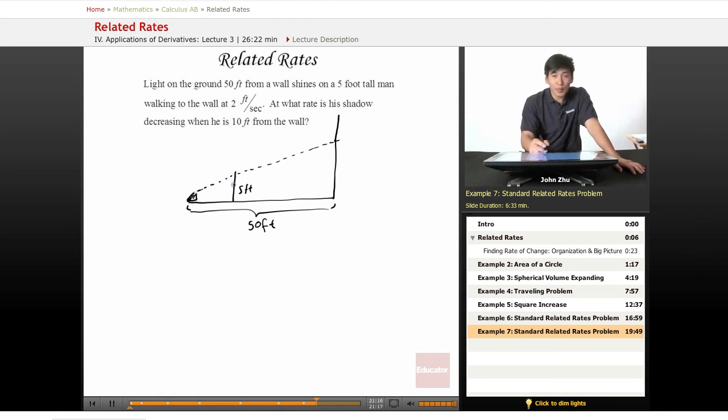So let's put some variables in here so we can use it to solve for derivatives. We're asking for the rate of his shadow decreasing. So here's his shadow. Let's call that Y. And we know that he's walking to the wall at two feet per second. So let's denote this distance x, and this distance 50 minus x. So we see that there's two similar triangles.